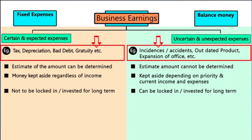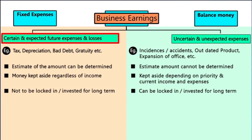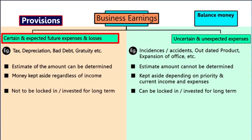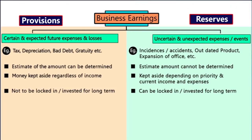So the amount which is provided for expected and certain future expenses and losses are known as provisions, while the amount which is preserved for unexpected or uncertain events are known as reserves.